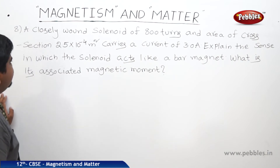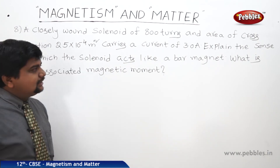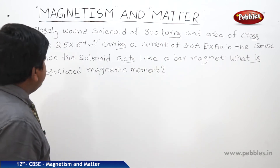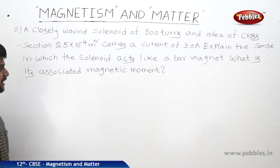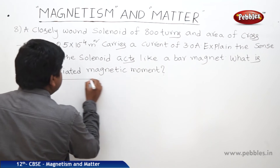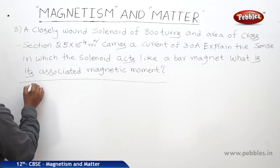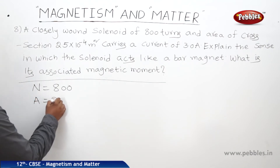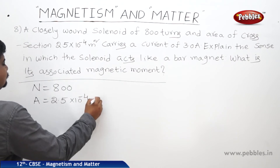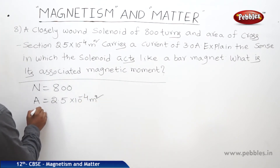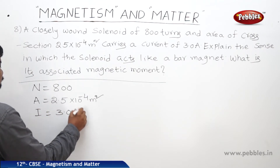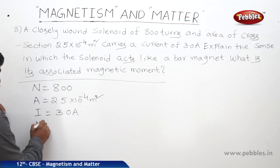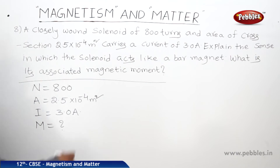This next problem concerns a closely wound solenoid of 800 turns and area of cross-section 2.5×10⁻⁴ m², carrying a current of 3 amperes. We need to explain the sense in which the solenoid acts like a bar magnet and find its associated magnetic moment.